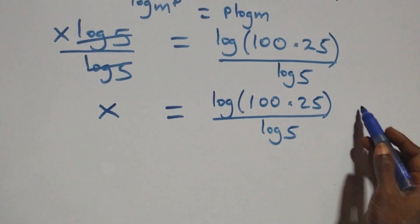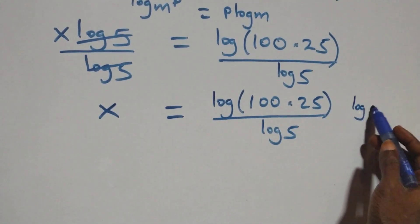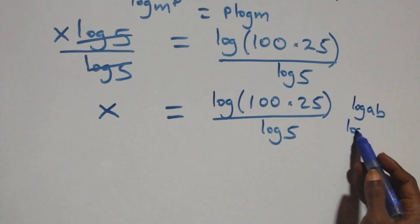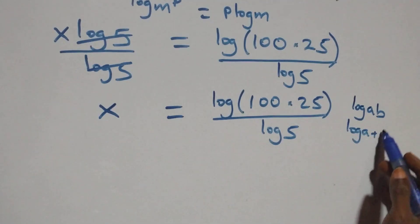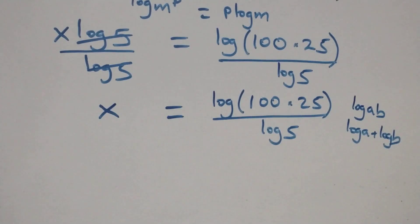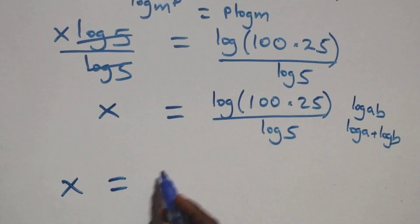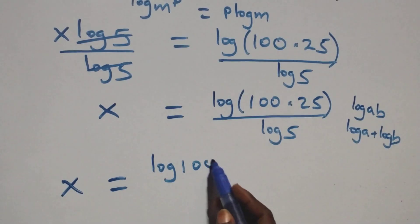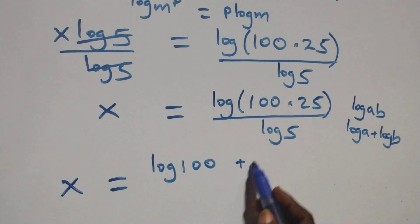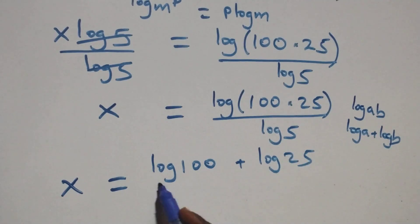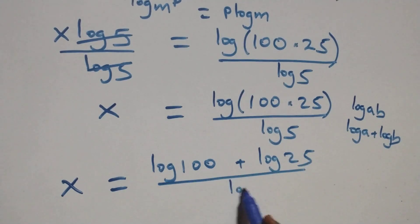Then this follows the law of logarithms. What we have — log a times b — is the same thing as log a plus log b. So we have x equals log 100 plus log 25 over log 5.